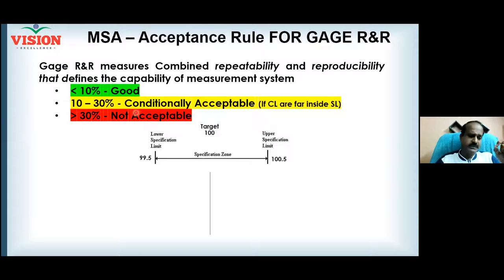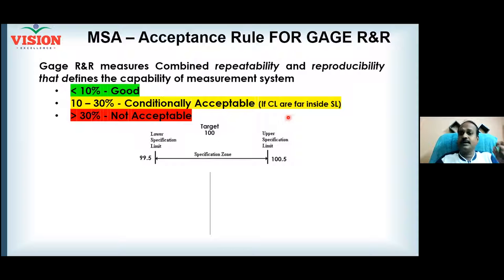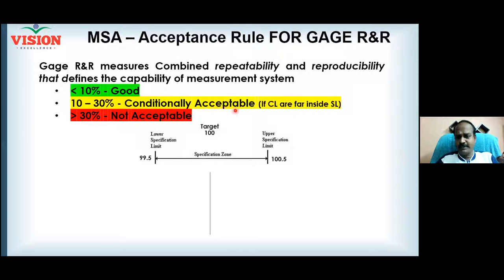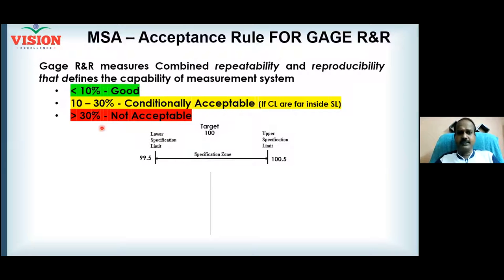What is the meaning of conditionally accepting the measurement system? If you are sure that your control limits are far inside the specification limit, you can tolerate up to 30%. But if your control limits are closer to the specification limit, the requirement is strict: less than 10%. In any case, more than 30% is not acceptable.